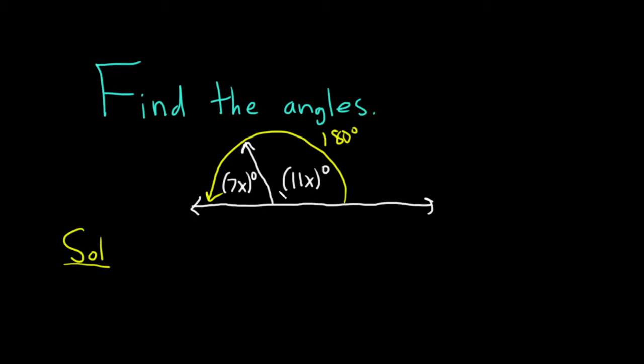So basically we just have to add these two angles and set them equal to 180. So 7x, and I'm going to omit the degree symbol until the end, plus 11x. That's equal to 180 degrees, which I'll omit until the end.